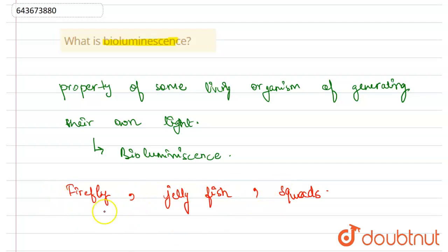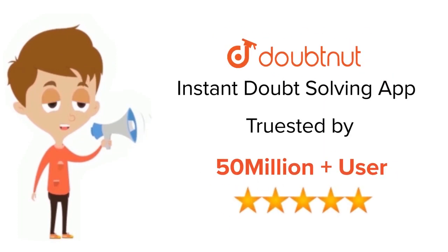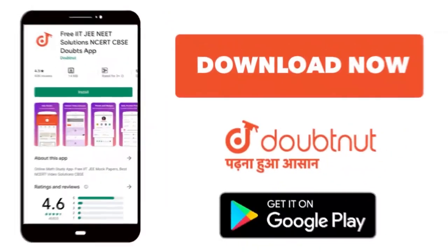Hope you've understood this well. For class 6 to 12, IIT-JEE and NEET level, trusted by more than 5 crore students. Download Doubtnet app today.